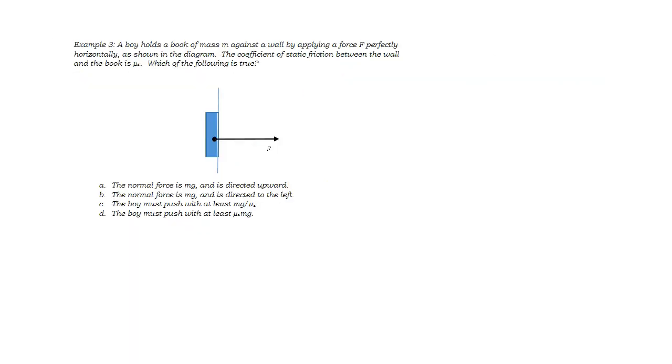In example 3, a boy holds a book against a wall by pushing perfectly horizontal with a force of f. Let's draw the other forces in. So the force of gravity is pulling down on the book. And friction is preventing it from sliding. And the wall's pushing back to the left, that's the normal force.